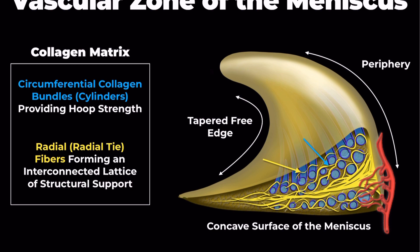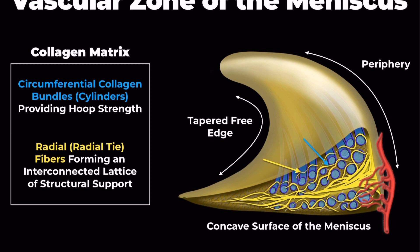Next, there are the radial fibers, which run perpendicular to these circumferential collagen bundles and stabilize them. Even in the presence of a meniscal tear, these radial fibers play a crucial role in preventing meniscal extrusion. Furthermore, we identify what we now refer to as the mid-perforating collagen, located centrally.